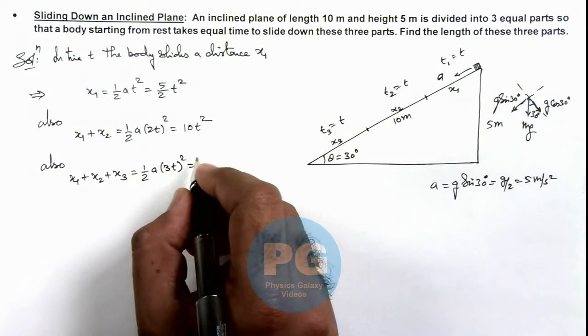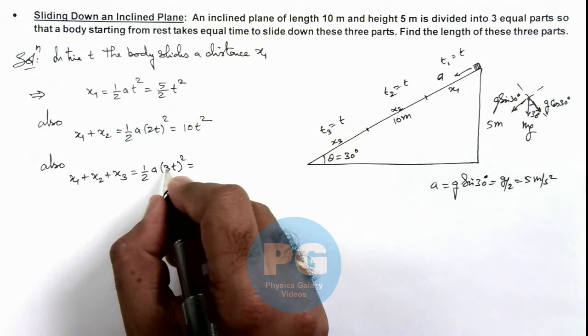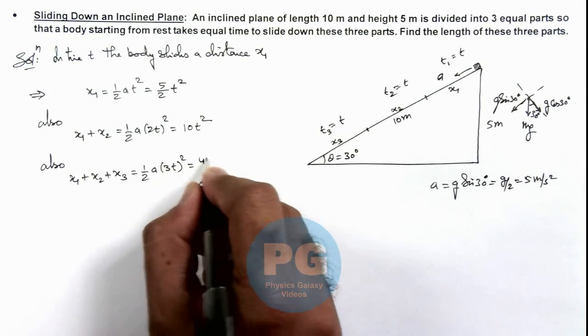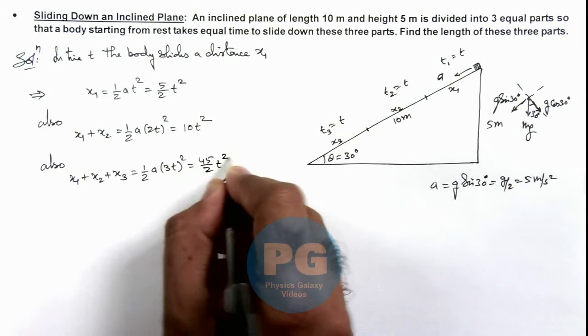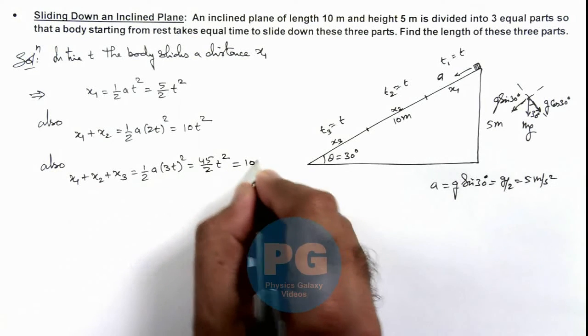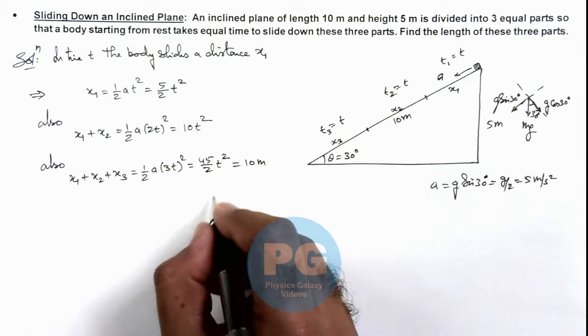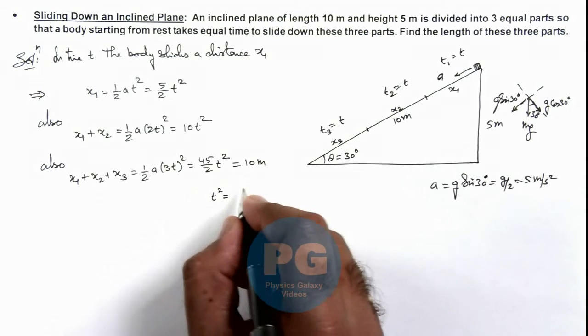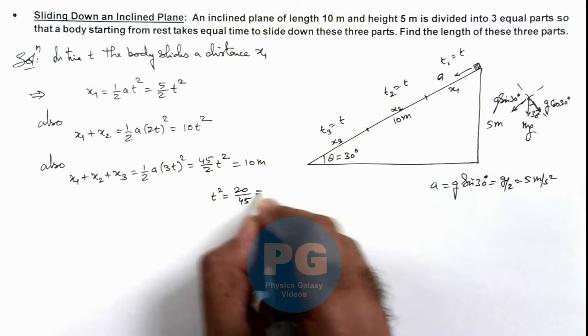So this we are getting as 9 by 2 a_y, that is 45 by 2 t squared. And we know that this total distance is 10 meters, so here we are getting t squared is equal to 20 by 45, which is 4 by 9.